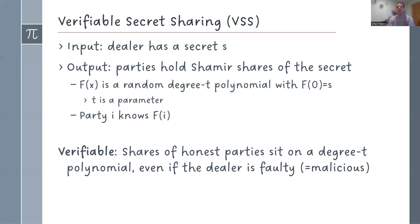There is a polynomial f of x of degree t. The evaluation of f at the point zero is your secret s, and party i knows the evaluation of f at i.